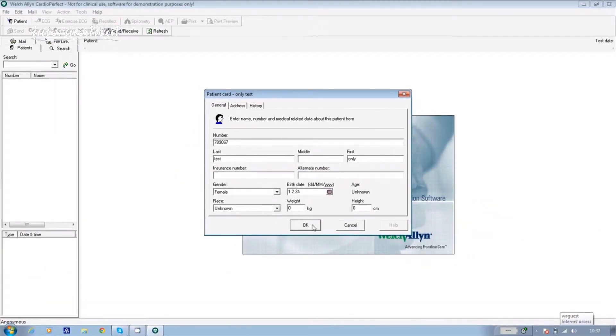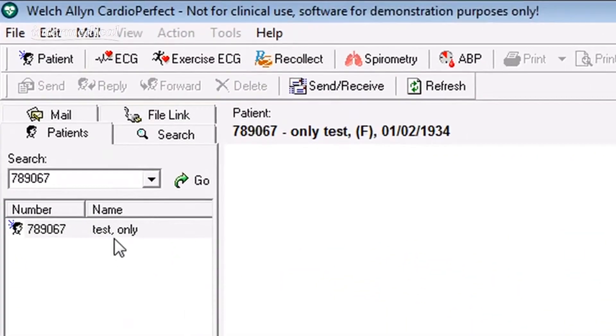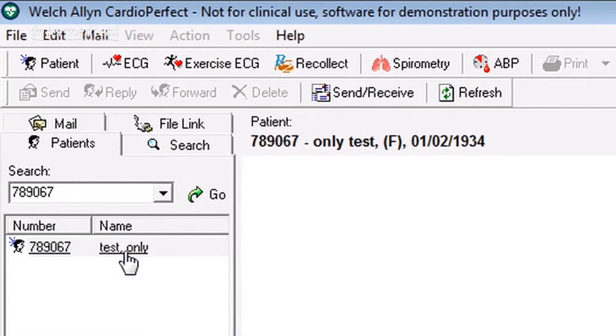And then click OK. Their details go into the memory and they'll be there next time the patient comes in for another test. If the patient has had an ECG before, you can find the patient's details in the database.